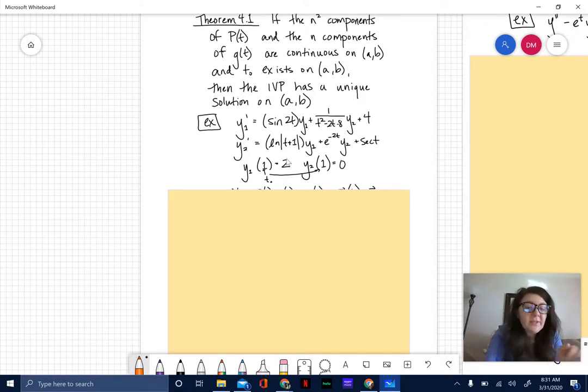Let's do an example here. We have y1 prime equals sine(2t) times y1 plus 1 over (t squared minus 2t minus 8) times y2 plus 4. Then we have y2 prime equals the natural log of the absolute value (t plus 1) times y1 plus e to the negative 2t times y2 plus secant t. This is pretty much in the form that we want it to be in. We do have an initial value problem here so our t sub zero is 1. That has to match for each of our initial values.